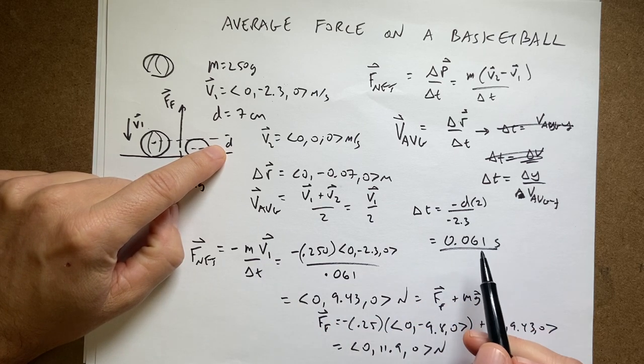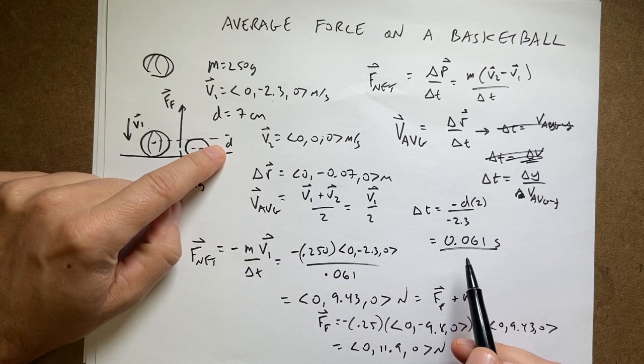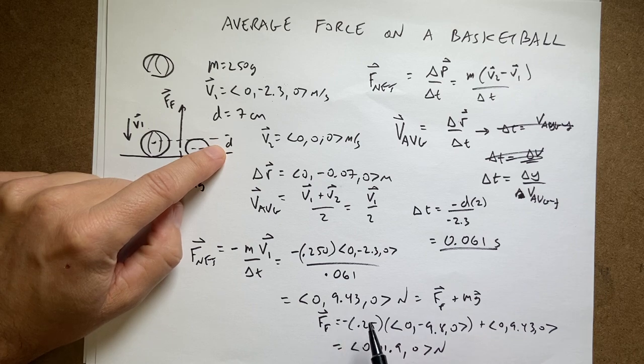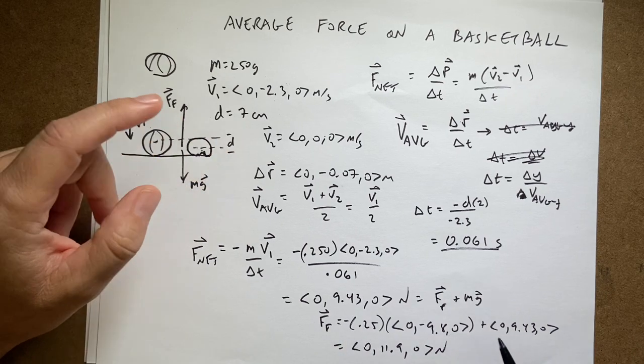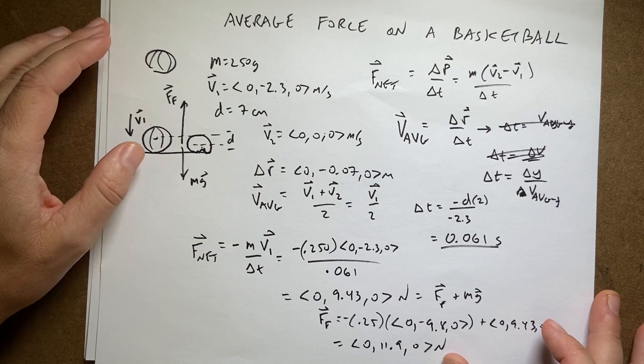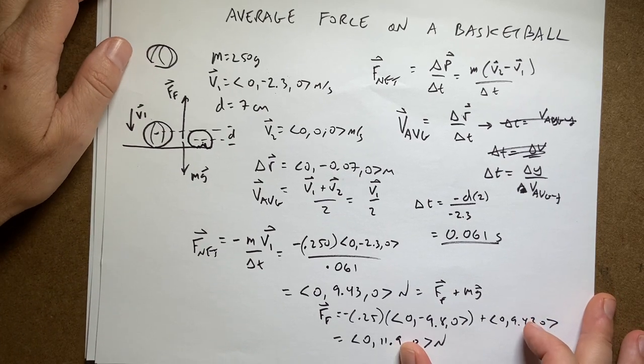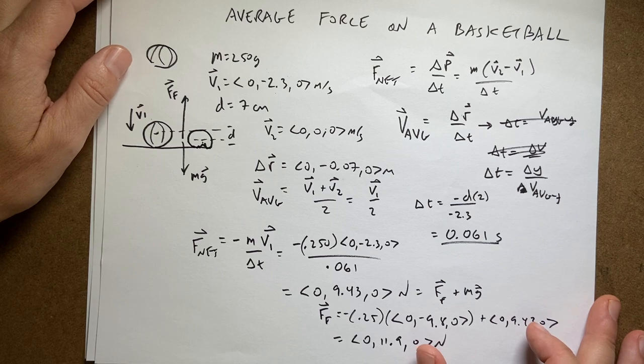Imagine if the time, the distance compressed, was just two centimeters. That's going to make this time interval much much shorter, it's going to make this force much larger, and then this gravitational force is even a lot more insignificant. But there you go, force on a basketball colliding with the floor.